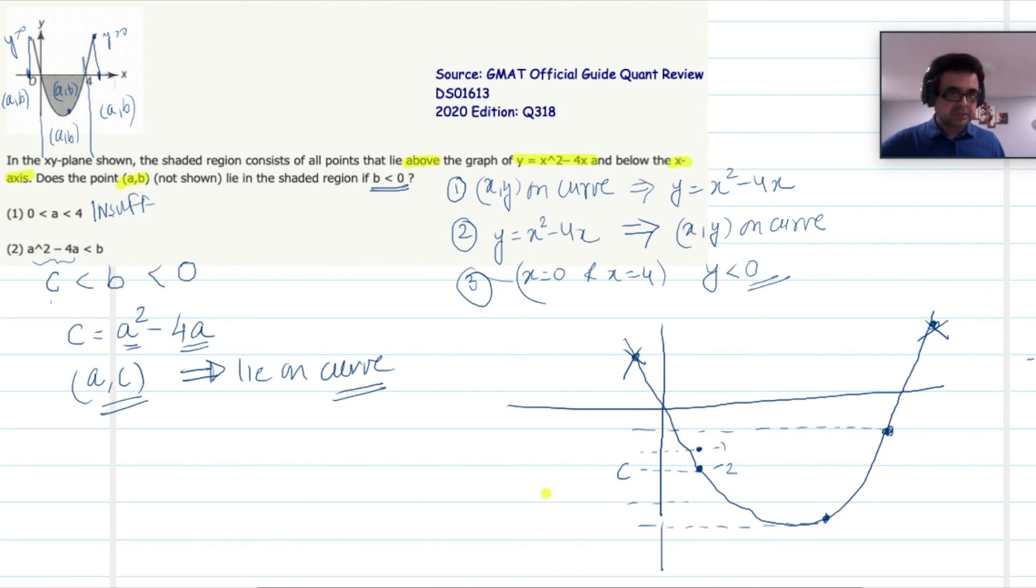For this point, where does b greater than c lie? So anywhere here, for this point anywhere here, and for this point anywhere here. So what you're seeing is already given the b is greater than c, b is above the curve, and hence b has to be in the shaded area. So this statement is sufficient to answer the question.